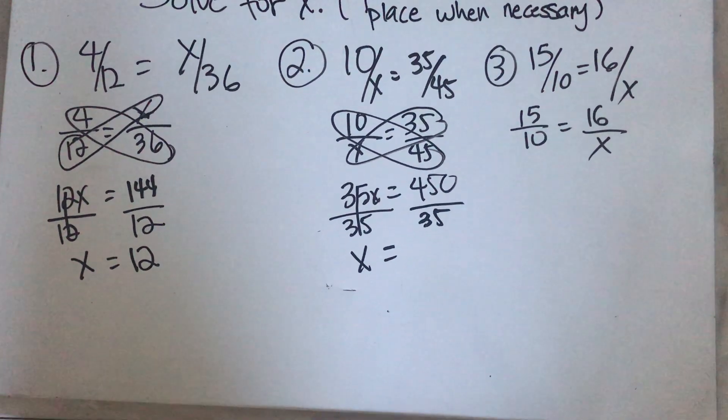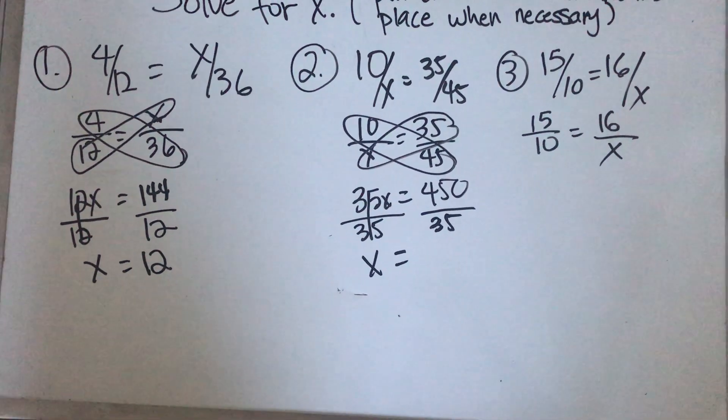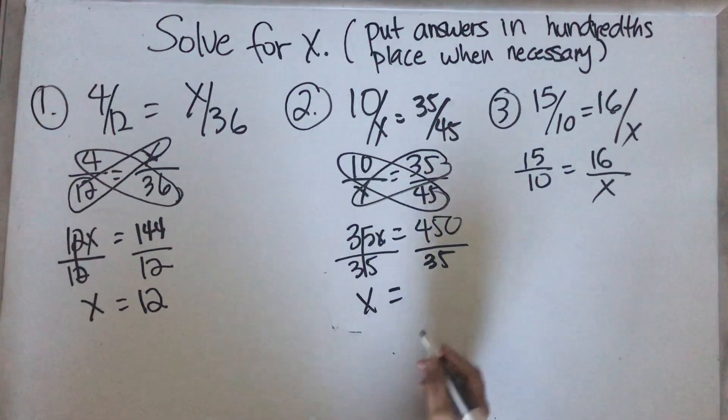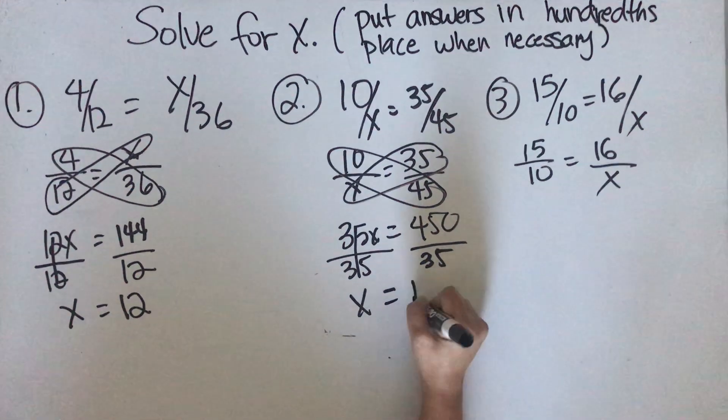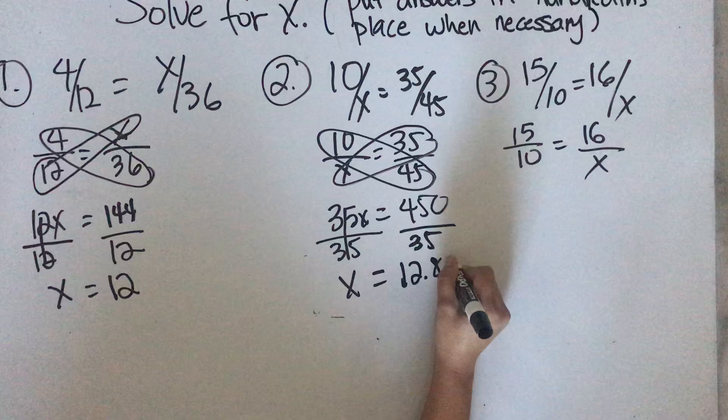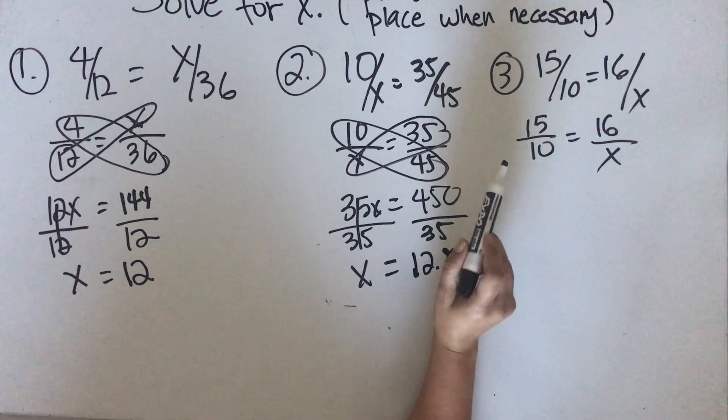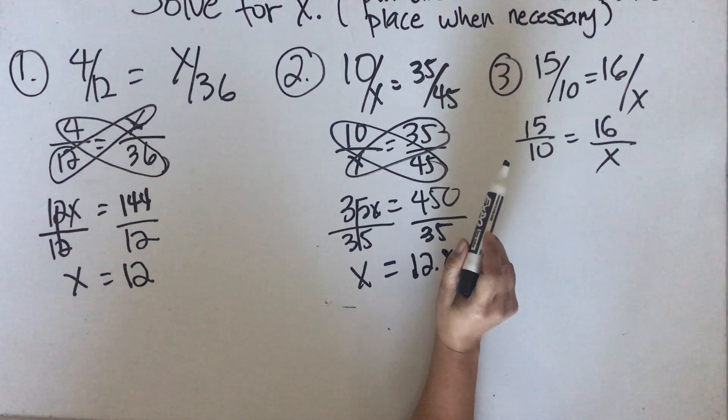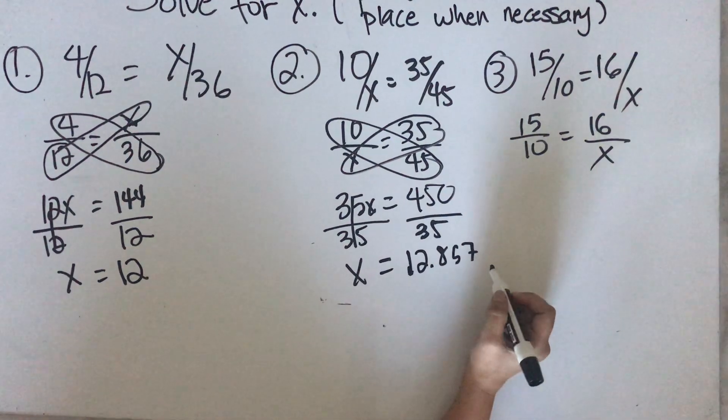So 450, how many times is 35 going to 450? The answer here is going to be 12.857. But I want you to place your answers in hundredths place.